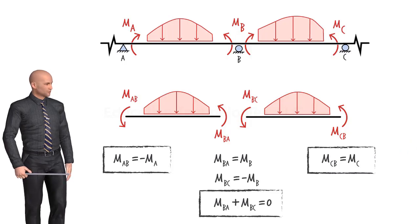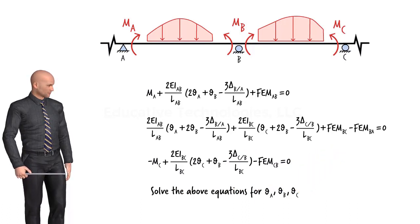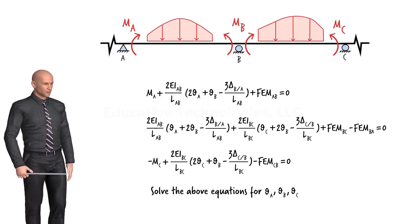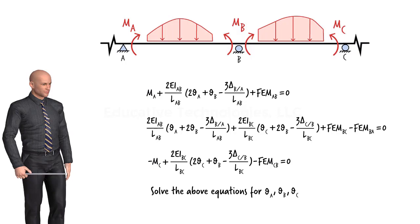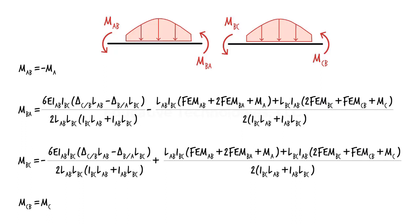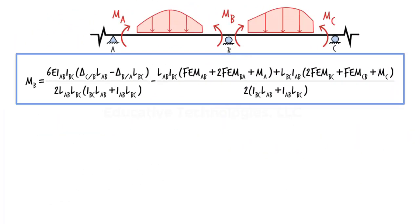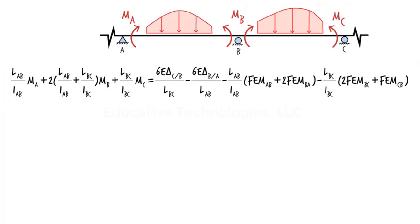Substituting the slope deflection equations into the equilibrium equations, we can solve for the slopes at A, B, and C. See the accompanying PDF file for the mathematical expression for each calculated slope. If we substitute the slope expressions back into the slope deflection equations and rearrange, we get the generalized form of the three-moment equation. Note how the equation takes into account the support settlements at A, B, and C.